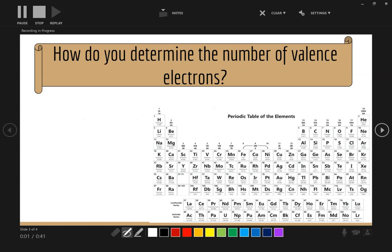So how do you determine the number of valence electrons? It is determined by the column number. So, column one, every element in column one has one valence electron. Every element in column two has two valence electrons.